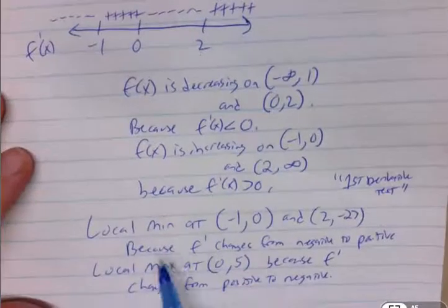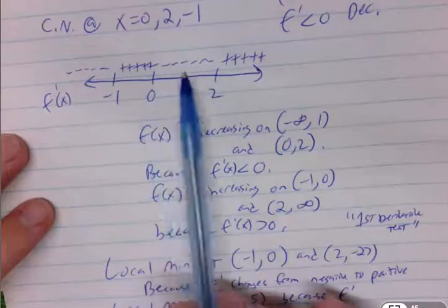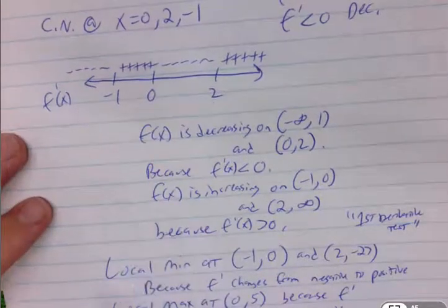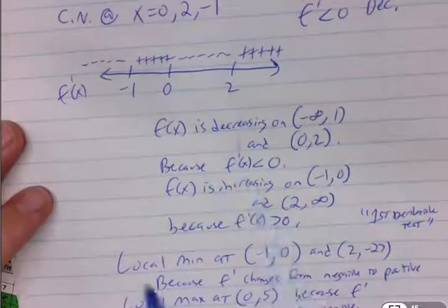Alright, so the first derivative test is basically how we found our maxes and mins, right? Utilizing the fact that if our first derivative changes from positive to negative or negative to positive, we'll have a max or a min accordingly. Our second derivative test will also yield the same information, but it's as if we didn't have any of this available to us.